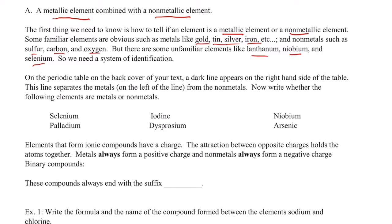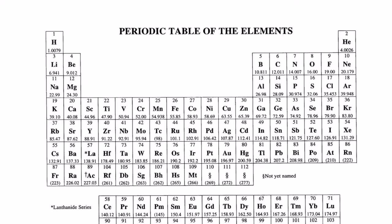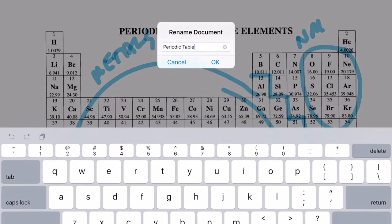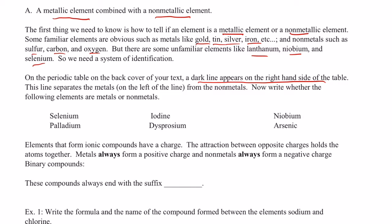So on the periodic table, we drew a line that appears on the right-hand side of the table. Let's go ahead and draw that line again. I'm going to use my highlighter here. It starts under boron, remember? And it's a little staircase line. It goes all the way down to the bottom. Remember, these guys over here are nonmetals. All of the rest of these guys are metals, except for hydrogen.